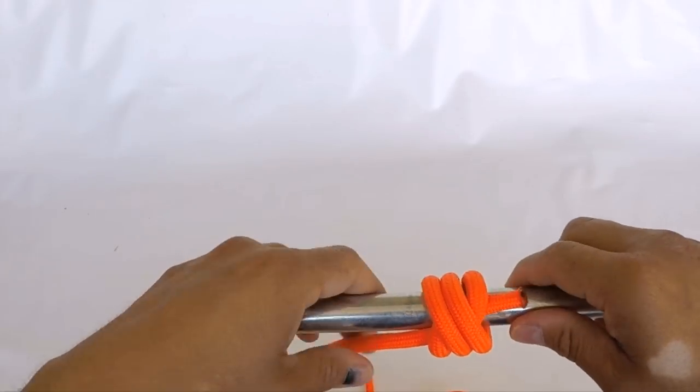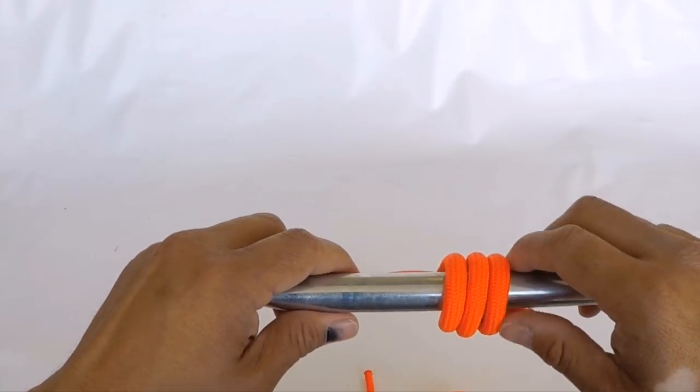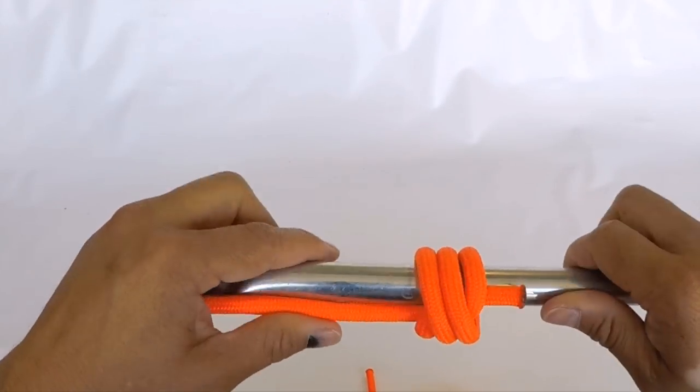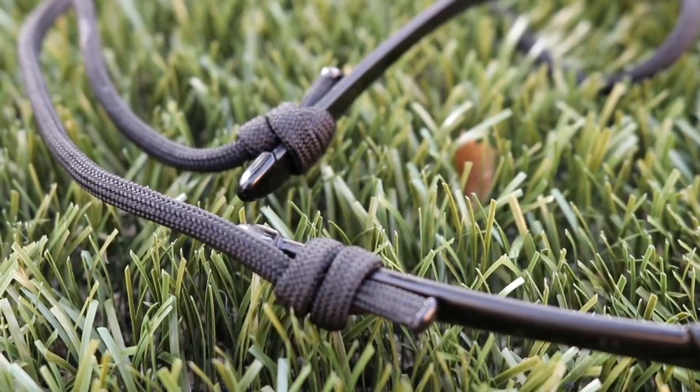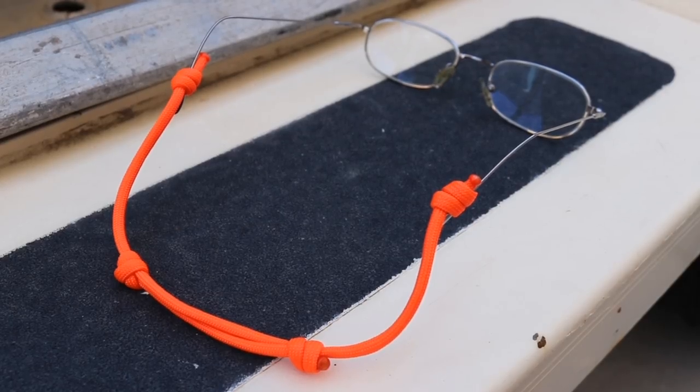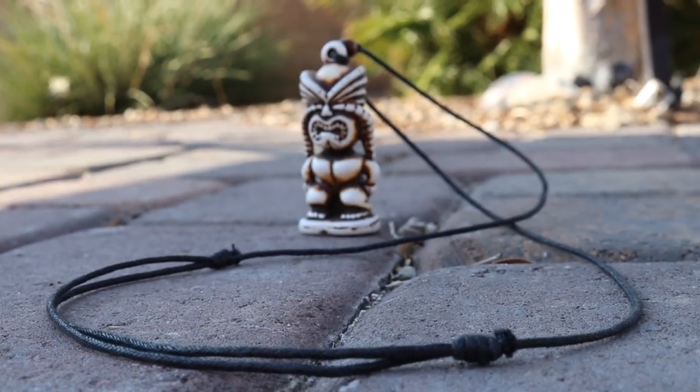You can wrap it as many times as you want. This one I did three turns for. This is what you would use to hold glasses onto your head, or it's even the same knot they use for an adjustable necklace knot.